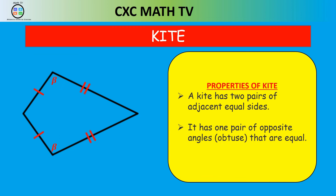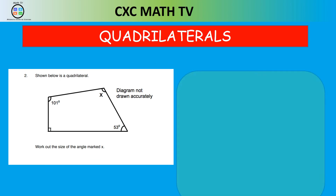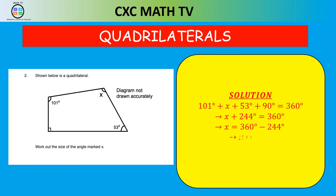Let's look at some questions involving quadrilaterals. Shown below is a quadrilateral — work out the size of angle x. This is an irregular quadrilateral, but the sum of all angles in a quadrilateral is 360 degrees. So 101 plus x plus 53 plus 90 equals 360. Adding those known angles gives 244 plus x equals 360. Transposing, x equals 116 degrees.